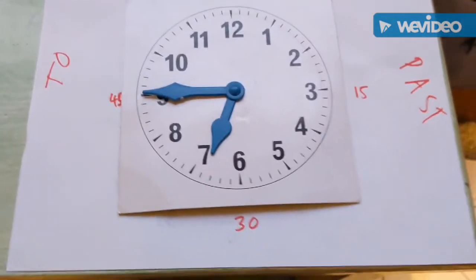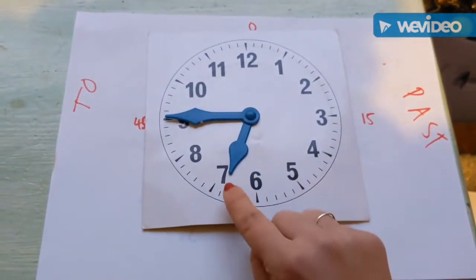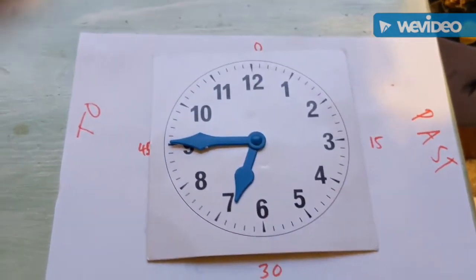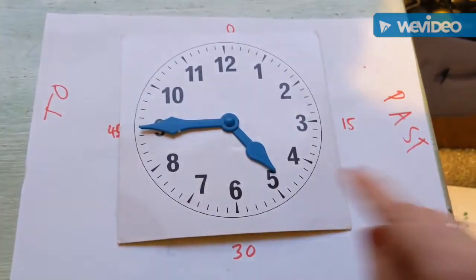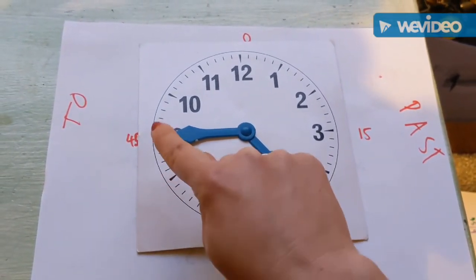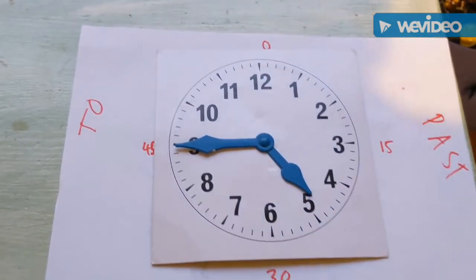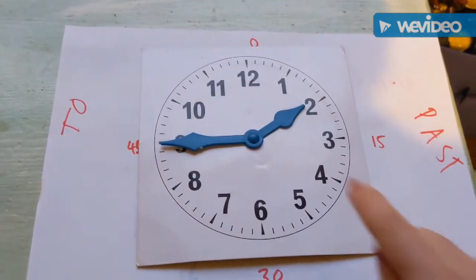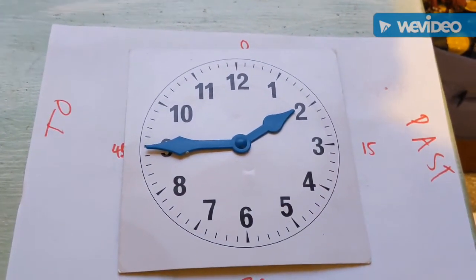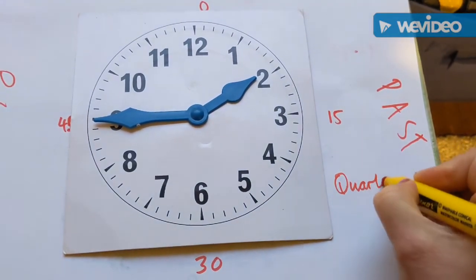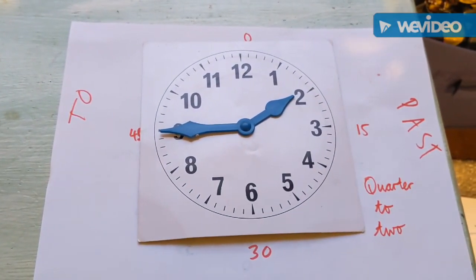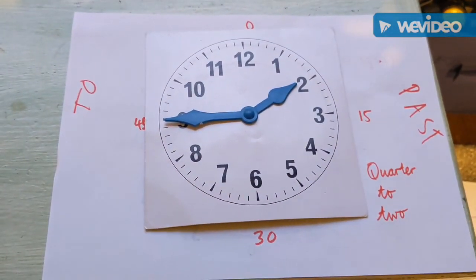Let's do a couple more quarter to times. Here the hour hand is just coming to the seven and the minute hand is pointing to the nine - it's got quarter of a turn left before it will be seven, so it's quarter to seven. For this one, the hour hand is just coming up to the five and the minute hand is pointing to the nine, the 45 minutes - it's got quarter of a turn before it will be five, so it's quarter to five. And this one, the hour hand is just coming up to the two and the minute hand is pointing to the nine - it's quarter to two. Now have a go at the second part of the 'do it', and maybe the 'twist it' and 'solve it' if you have time as well.